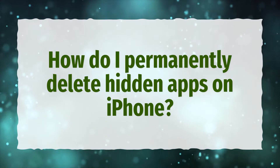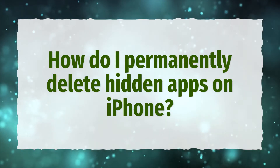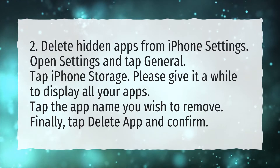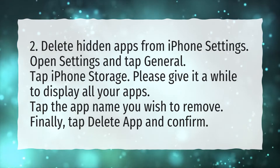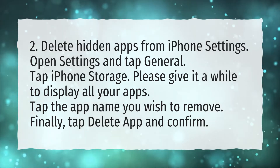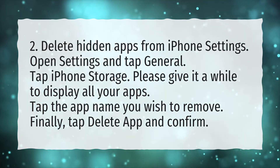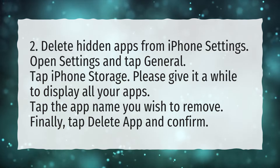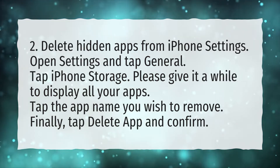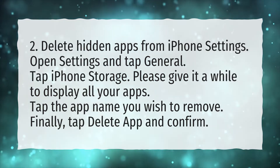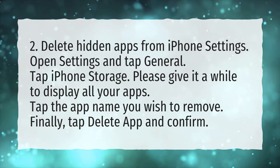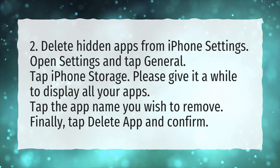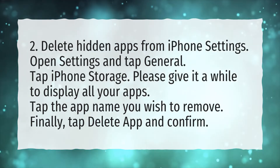How do I permanently delete hidden apps on iPhone? Delete hidden apps from iPhone settings. Open Settings and tap General. Tap iPhone Storage. Please give it a while to display all your apps. Tap the app name you wish to remove. Finally, tap Delete App and confirm.